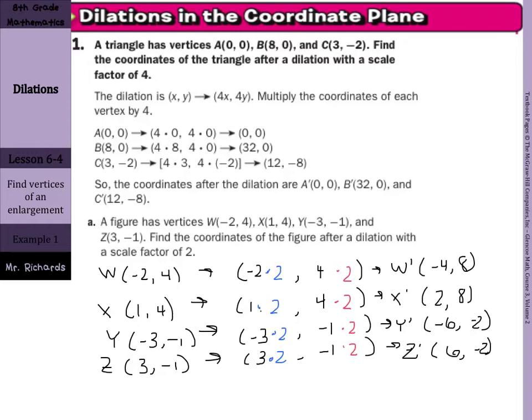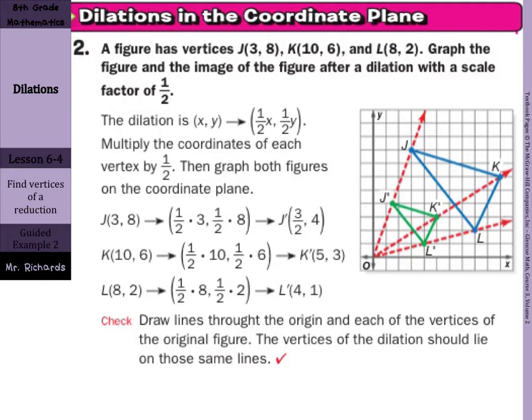A figure has vertices (3, 8), (10, 6), (8, 2). Graph the figure and the image of the figure after dilation with a scale factor of 1 half. Well, 1 half is between 0 and 1, so we are reducing our image. We multiply our x's and our y's by 1 half and you can see the results. It goes from this image and cuts it in half to that image.